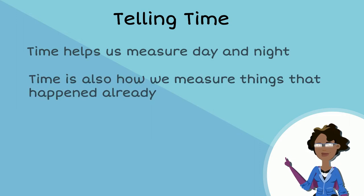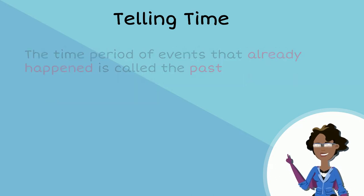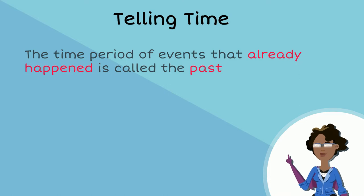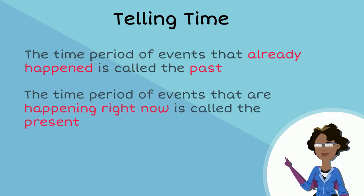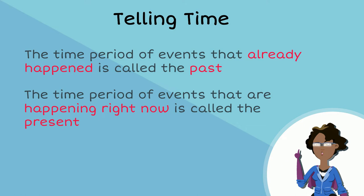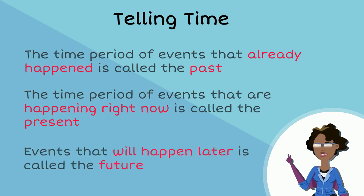Time is also how we measure things that happened already, like events. The time period of events that already happened is called the past, whereas the time period of events that are happening right now is called the present. What about the time period of events that will happen? Yes, you guessed right, that's called the future.